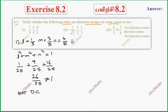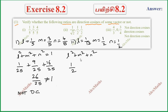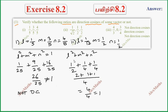Subdivision 2: L = 1/√2, M = 1/2, N = 1/2. L² + M² + N² = 1/2 + 1/4 + 1/4, which equals 1. This is satisfied. Therefore, it represents the direction cosines.